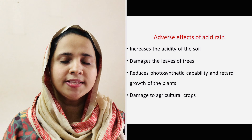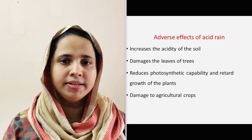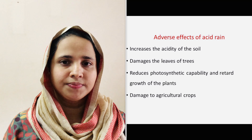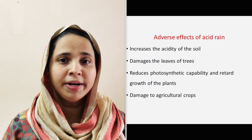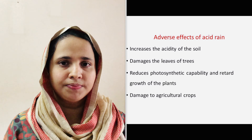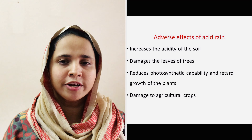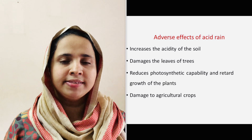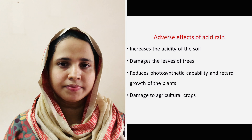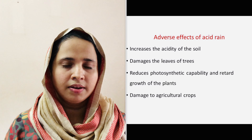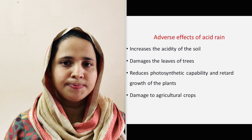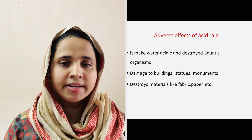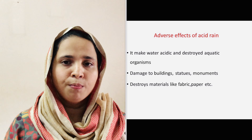Acid rain damages the leaves of trees, reduces their photosynthesis capability, and retards their growth, thereby destroying forests. As a result, the natural resources for the production of wood, wood pulp, paper, etc. are decreased.